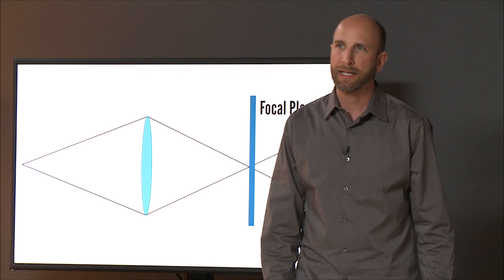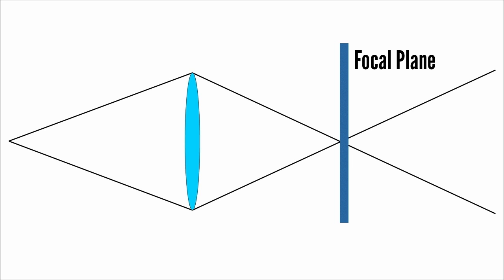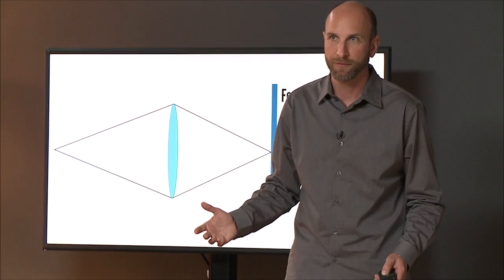And so what we want is we want this focal point to hit what is called our plane of focus, our focal plane. The focal plane is our sensor in our camera, or the film if we had film. So what we want to do is we want to have this focused on that. That's how we achieve focus. That's how focus works.